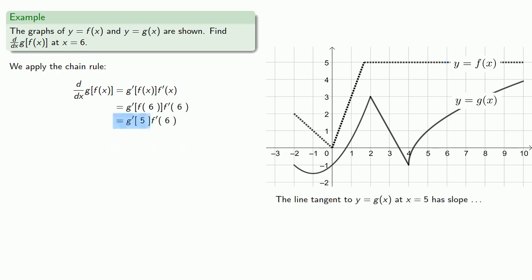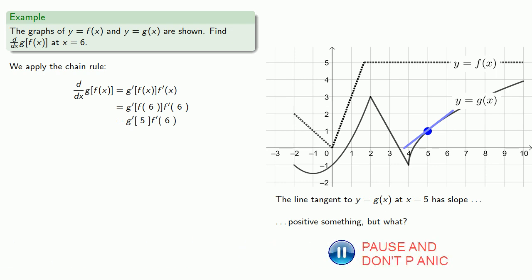To find g prime of 5, we want to find the slope of the line tangent to the graph of y equals g of x at x equals 5. Looking at the graph, the tangent line to y equals g of x at x equals 5 has some positive slope, but it's not entirely clear what that value is. If we absolutely had to get that slope, we could draw the tangent line and estimate, but that would give us at best an approximation. So let's see what else we can do.